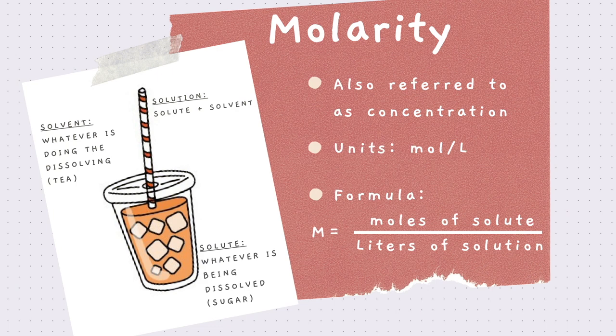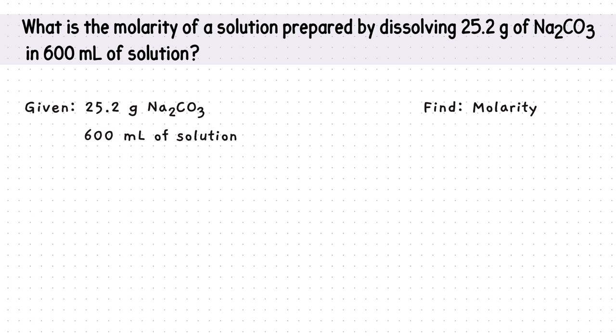Specifically, how to find the molarity of a solution. Recall the molarity formula is moles of the solute divided by the liters of the solution. A solute is the substance that is being dissolved. The solvent is the substance that is doing the dissolving, and the solution is the solute plus the solvent. Here's an example of a question you may see in the solutions chapter. It states, What is the molarity of a solution prepared by dissolving 25.2 grams of sodium carbonate in 600 milliliters of solution?